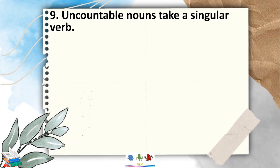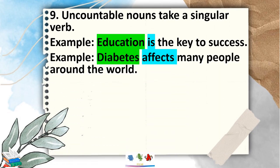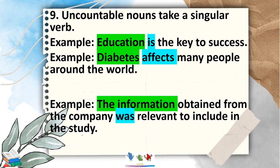Rule 9: uncountable nouns always take a singular verb. For example, 'Education is the key to success.' Education is singular and uncountable — we cannot count education — therefore it takes a singular verb. Another example: 'Diabetes affects many people around the world.' Diabetes is singular and uncountable, so it takes a singular verb: 'affects.'